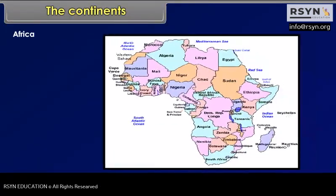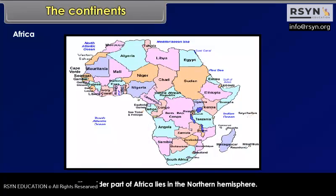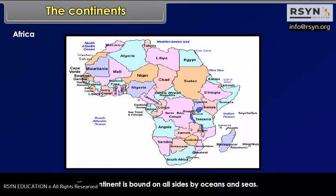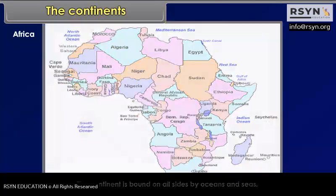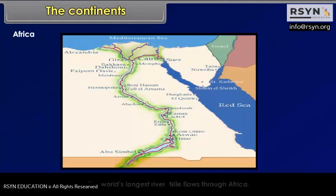Africa is the second-largest continent after Asia. The Equator runs almost through the middle of this continent. The wider part of Africa lies in the Northern Hemisphere. It is the only continent through which both the Tropic of Cancer and the Tropic of Capricorn pass. The continent is bound on all sides by oceans and seas. The largest hot desert of the world, the Sahara Desert, is situated in Africa. The world's longest river, the Nile, flows through Africa.